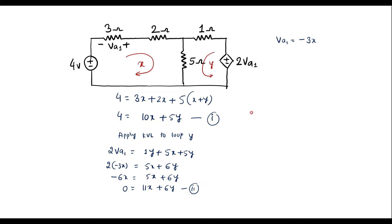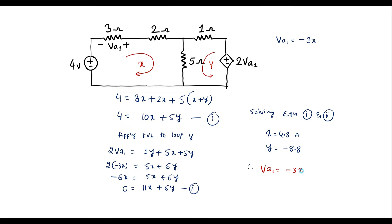Solving equations 1 and 2 using a calculator, we get X equals 4.8 amps and Y equals minus 8.8. Therefore VA1 equals minus 3X, that is minus 3 times 4.8, giving VA1 equals minus 14.4 volts. So VA1 is the voltage across the 3 ohm resistor considering the 4 volt source alone.